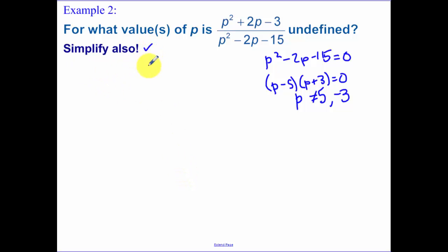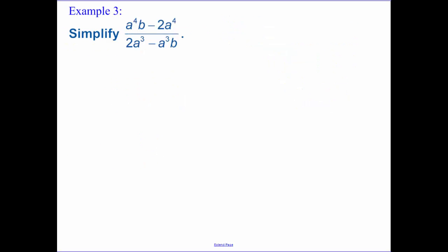Now I also wanted you to simplify. We have p minus 5, we have p plus 3 is our bottom, we already factored. Now factor the top, p plus 3, p minus 1. Remember that these numbers here need to multiply to be negative 3 but add to be positive 2. That's why my larger of the two numbers is positive. The p plus 3's cancel, so we are left with p minus 1 over p minus 5.